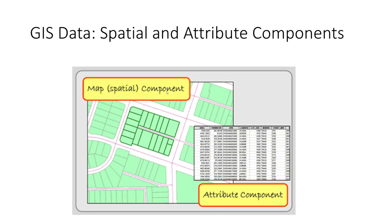If we talk about an individual layer of data, we're going to have a spatial and an attribute component — dealing more with the vector model: points, lines, and polygons. Here we've got polygons that look like residential parcels, and with each of these residential parcels you will have a corresponding attribute record that stores descriptive or numeric data in table form that associates back to that spatial data.